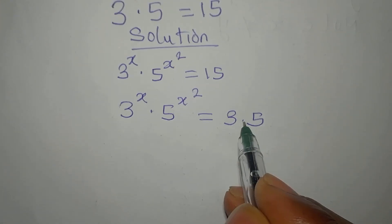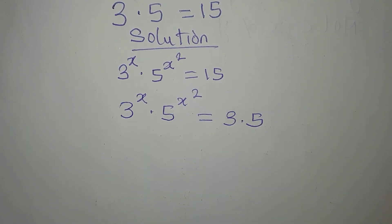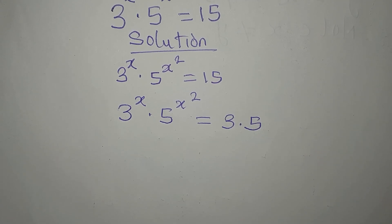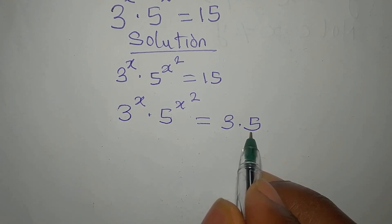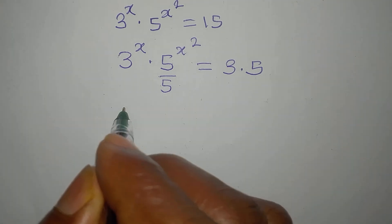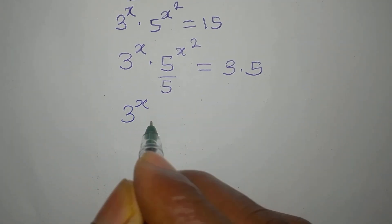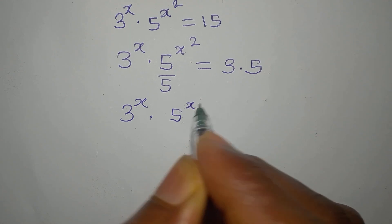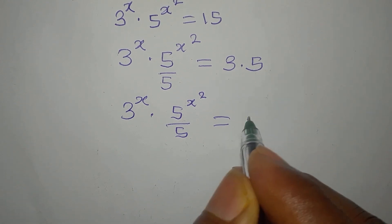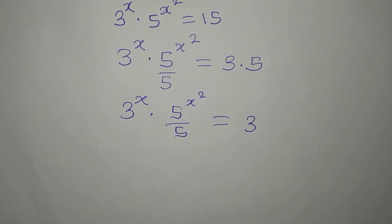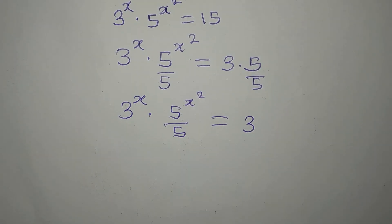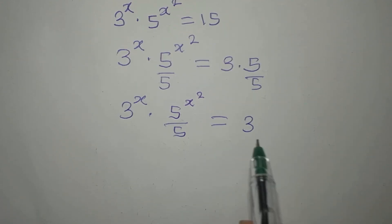Now I can compare what I had before. The first step I want to take is to divide both sides by 5. So I'm going to divide this by 5, which means I'll have 3 to the power of x times 5^(x²) over 5 equals 3. The 5 will cancel itself and 5 times 3 becomes 3.